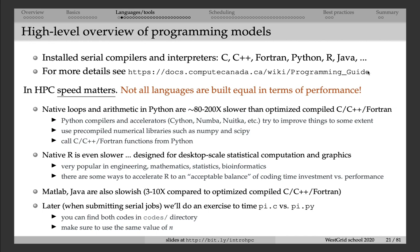If you are thinking about writing a new code, especially if it's a very large code that will run for many hours or many days, we really highly recommend spending a lot of time thinking about what language to use, because compiled languages are much faster than scripting languages. The ideal choice would be things like C, C++, Fortran, perhaps Julia or Chapel, but not scripting languages. R is even slower than Python, but everything said about Python applies to R as well.